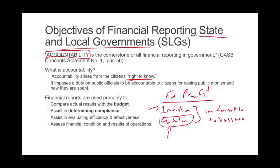It's very important that citizens want to make sure that we achieved inter-period equity. It's important for us to show whether we did achieve inter-period equity or not. Accountability imposes a duty on public officials to be accountable to citizens for raising public money and how it is spent. The citizens have the right to know how you raised the money, how you brought in the cash, and how you spent the cash — and you show this through a budget.